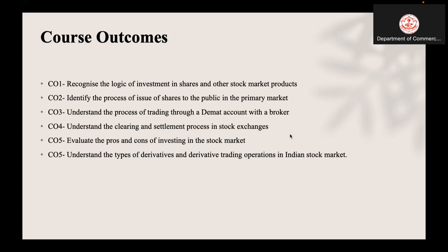The second course outcome is to identify the process of issue of shares to the public in the primary market. Course outcome three is to understand the process of trading through a DEMAT account with a broker. Course outcome four is to understand the clearing and settlement process in stock exchanges. Course outcome five is to evaluate the pros and cons of investing in the stock market, and course outcome six is to understand the types of derivatives and derivative trading operations in the Indian stock market.